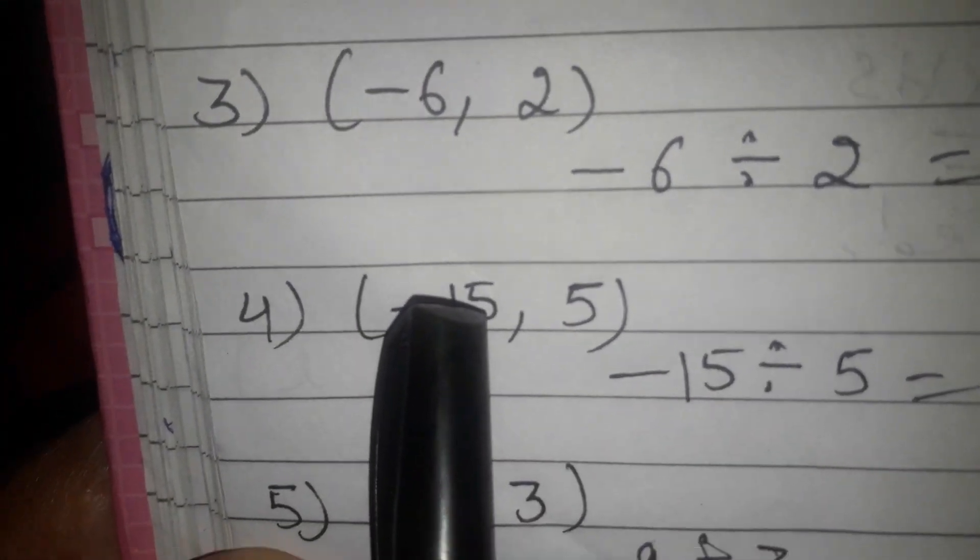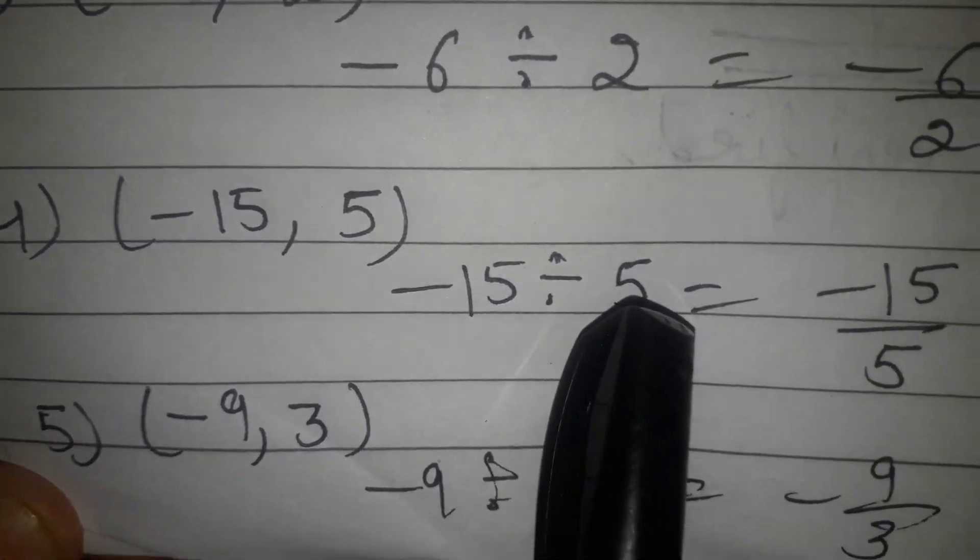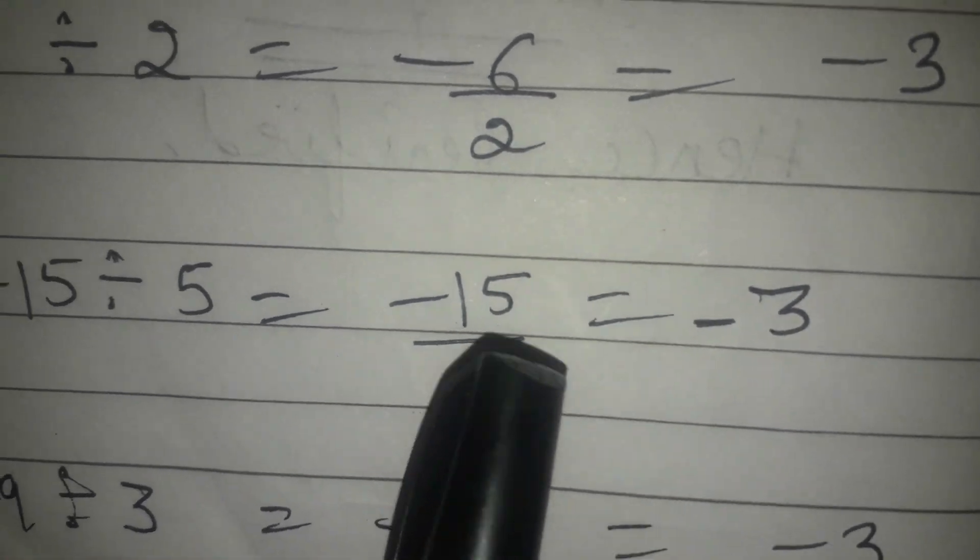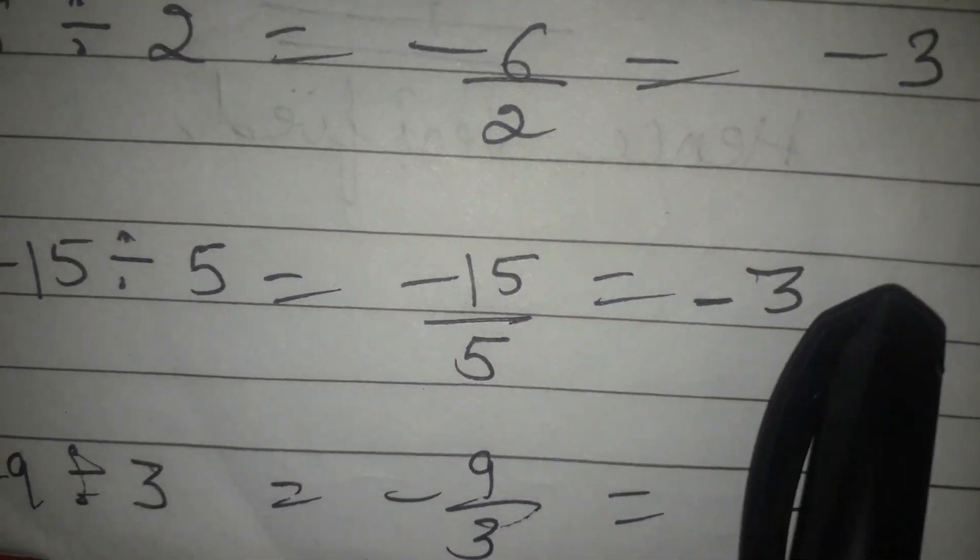Fourth pair is minus 15 and 5. Minus 15 is divided by 5, minus 15 upon 5. Cancel. 5 ones are 5, 5 threes are 15. Answer is again minus 3.